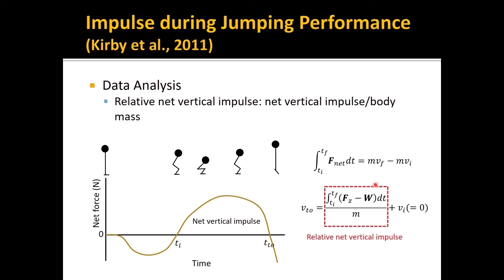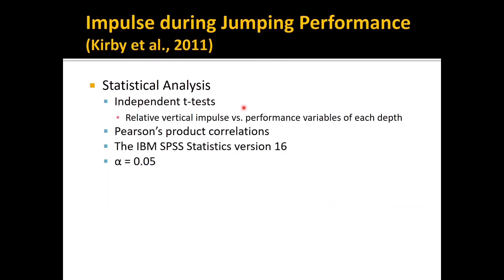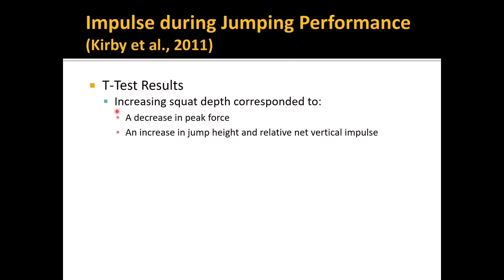For statistical analysis, independent t-tests were used to determine differences between relative vertical impulse and performance variables at each depth, and Pearson product correlations were used to determine relationships. SPSS was used and the significance level was set at 0.05. T-test results: increasing squat depth corresponded to a decrease in peak force and an increase in jump height and relative net vertical impulse for both SJ and CJ.